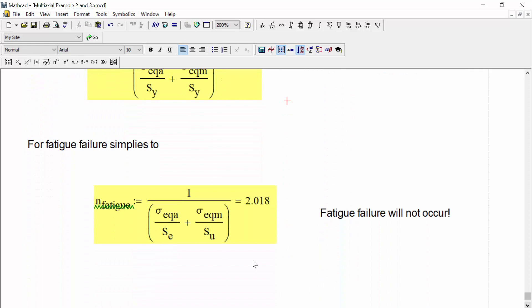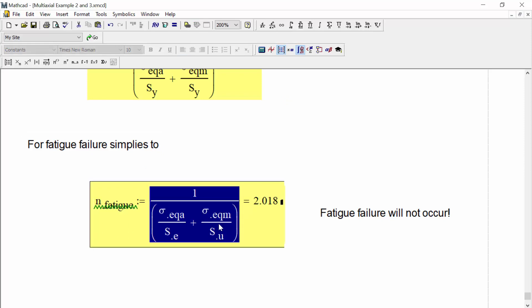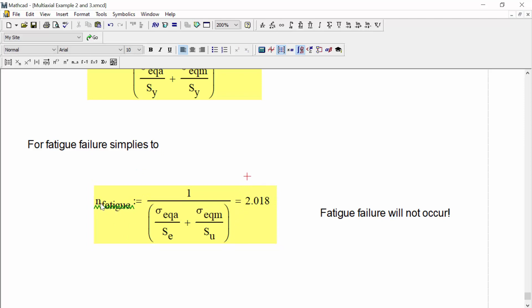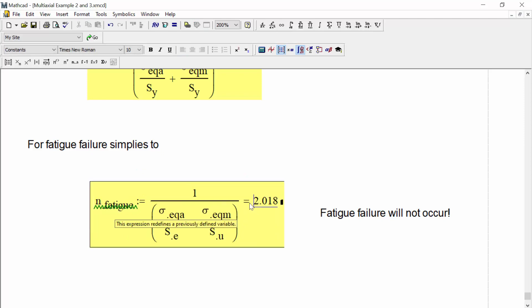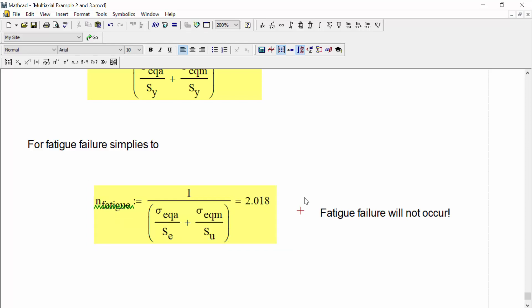Now let's do for the fatigue failure case. This is where we would use the modified Goodman equation as is. We rearrange and solve to get this following form. And when we plug in our values, the safety factor for fatigue is 2.018. Since it is greater than 1, that means fatigue failure will not occur. That means that we have a case of infinite life.